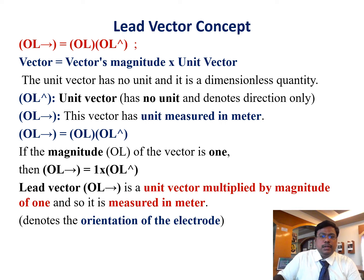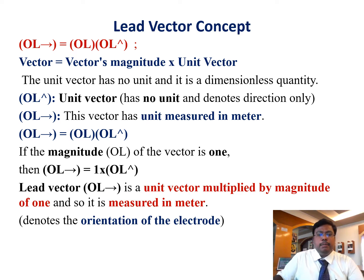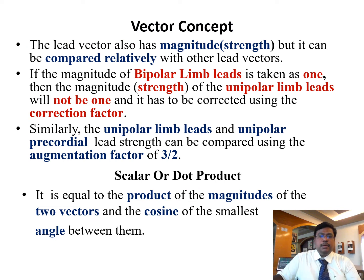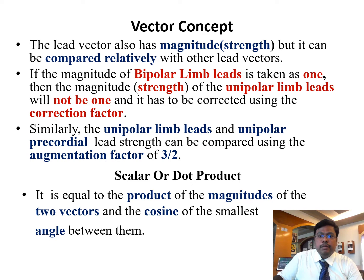Lead vector concept: a vector equals its magnitude times its unit vector, so the OL vector equals OL times the OL unit vector. The unit vector has no unit and is a dimensionless quantity. If we take the magnitude as one, then the OL vector equals one times the OL unit vector. The lead vector is a unit vector multiplied by a magnitude of one, measured in meters, and denotes the orientation of the electrode. The lead vector also has relative magnitude strength. I have taken the bipolar limb as one because it was first introduced in ECG, so the strength of other leads can be relatively compared.